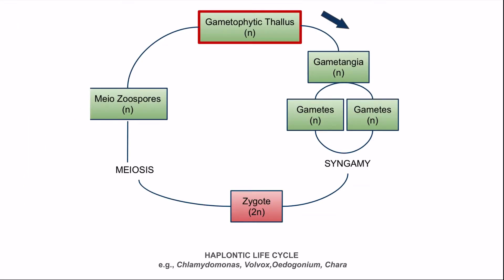First, I will discuss the haplontic life cycle. As the name suggests, all the stages are haploid. Only the zygote is diploid, and this type of life cycle is found in many algae. Some of the examples are Chlamydomonas, Volvox, Oedogonium, and Chara. So the main plant body in the haplontic type of life cycle is the gametophyte.